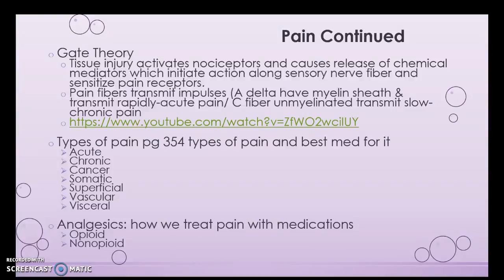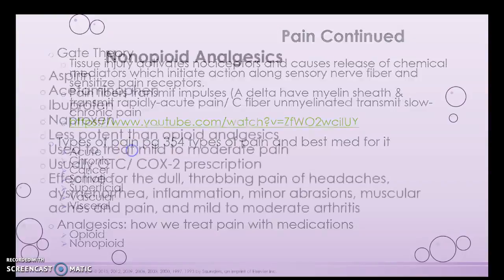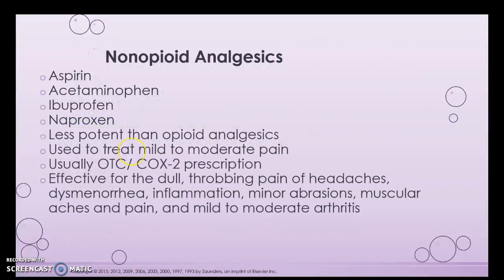Analgesics are how we treat pain with medications — either opioid or non-opioid. Non-opioids include things like aspirin, acetaminophen, ibuprofen, and naproxen — the things we just talked about. They're usually over-the-counter, and most NSAIDs can be obtained over-the-counter. They are effective for throbbing pain of headaches, dysmenorrhea, inflammation, and minor abrasions.